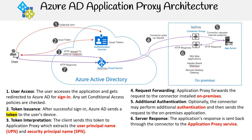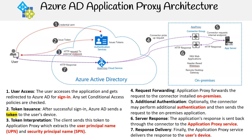Step six is server response: the application's response is sent back through the connector to the Application Proxy service. Step seven is response delivery: finally, the Application Proxy service delivers the response to the user's device.